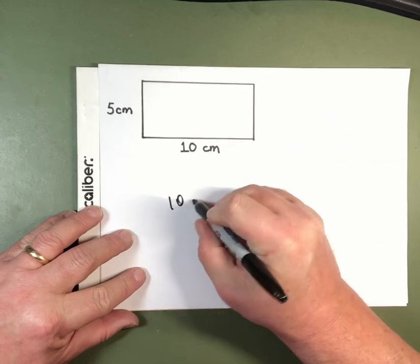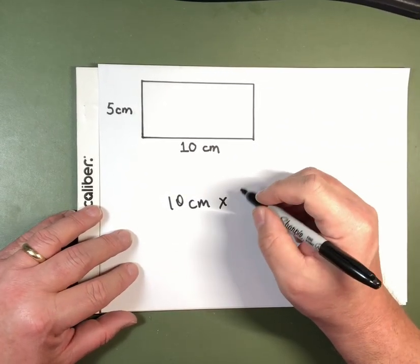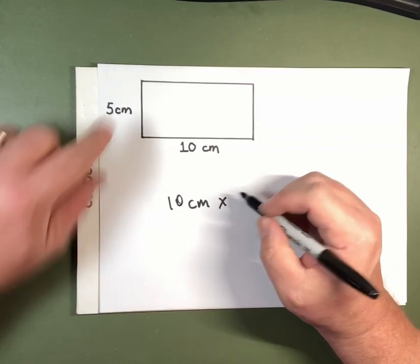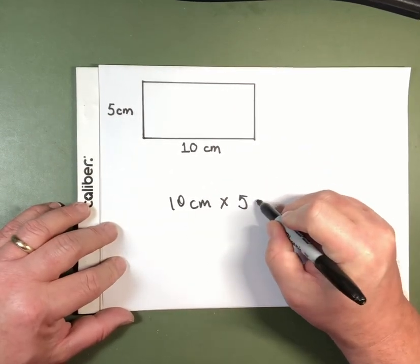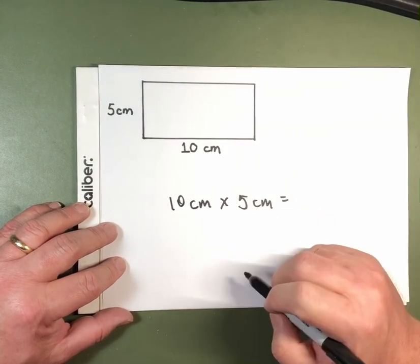So that's 10 centimeters. And we multiply times the length of the shorter side. That's five centimeters.